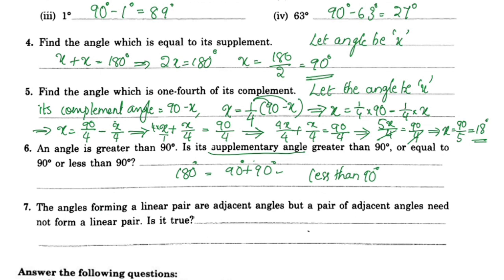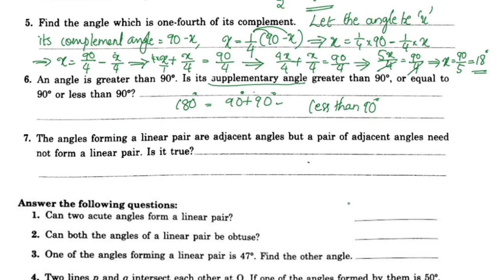The angles forming a linear pair are adjacent angles, but a pair of adjacent angles need not form a linear pair. These examples show that a linear pair consists of adjacent angles, though not all adjacent angles form a linear pair.